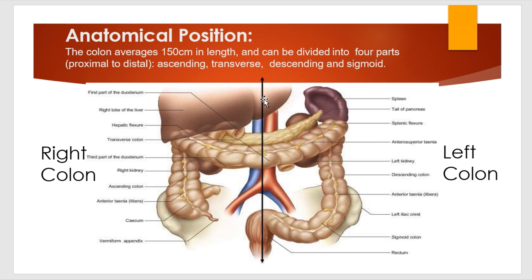First of all, what do we mean by right and left colonic malignancy? I have drawn a line here in between — you can see this is the right side and this is the left side of the human body. The average length of the human colon is around 150 centimeters. From proximal to distal it can be divided into four parts: ascending colon (the proximal one), then transverse colon, then descending colon, and sigmoid colon.